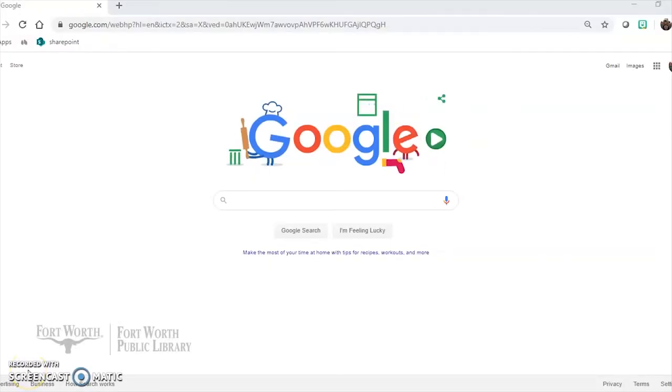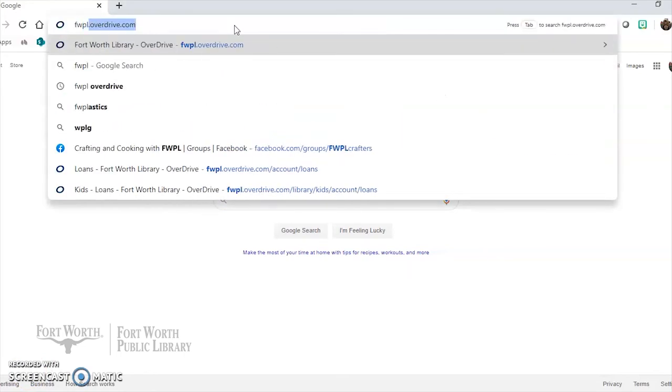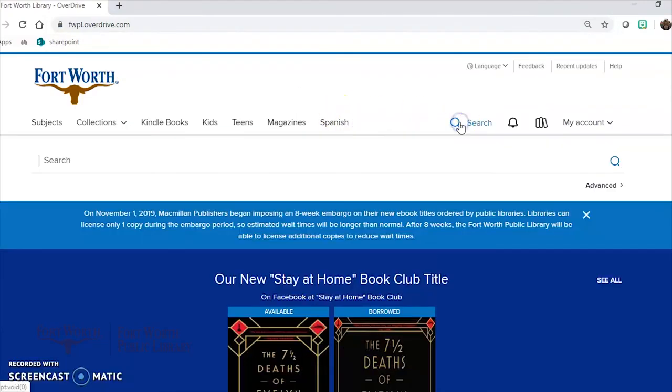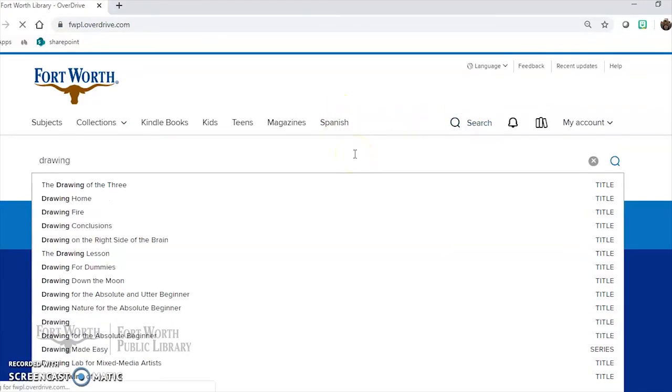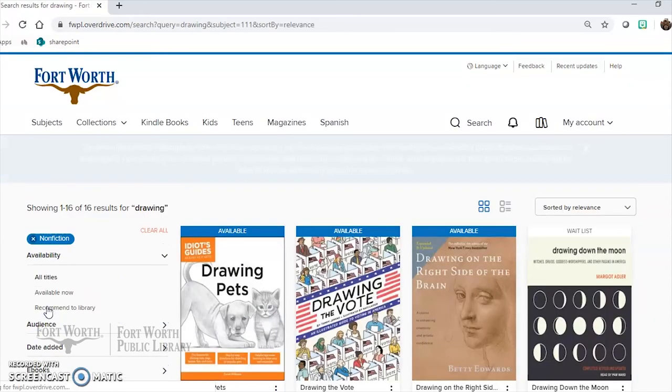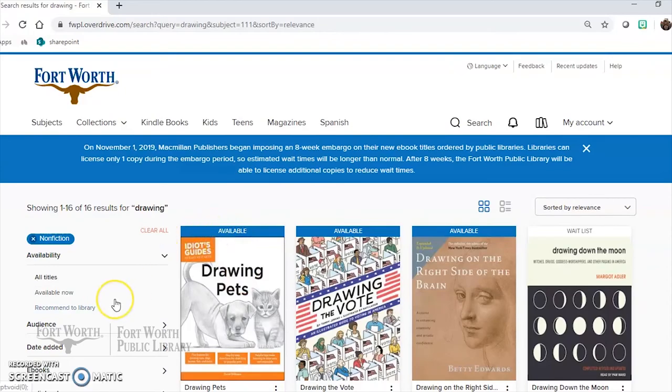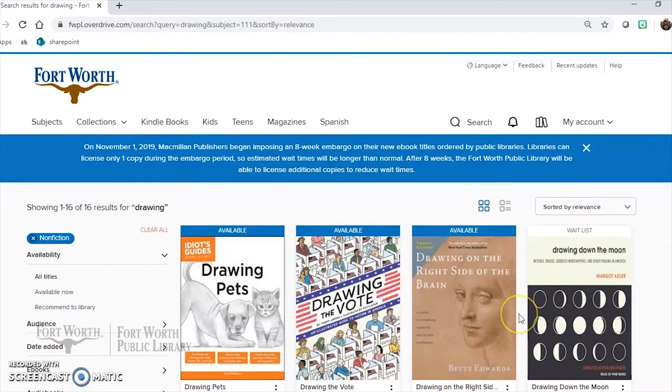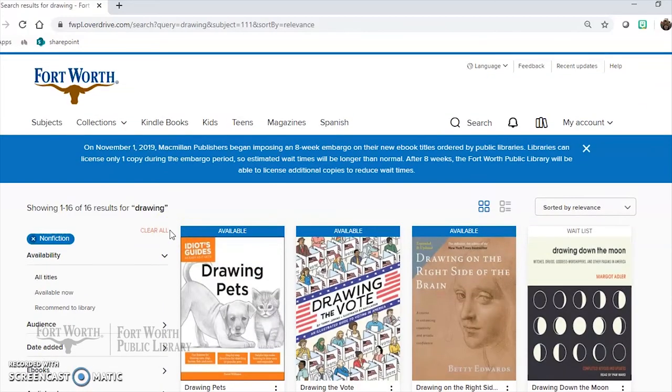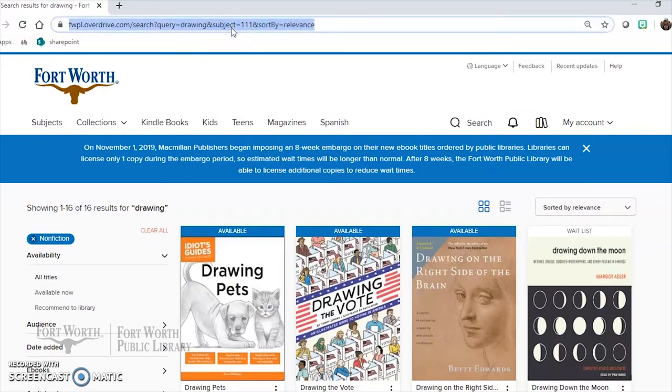I hope that you feel your creative juices flowing. If you need some resources head on over to the Fort Worth Public Library Overdrive website. We can search for drawing right here and narrow the search by going to nonfiction. And as you can see we have plenty of drawing books that are available for checkout right now. You can check it out digitally from the comfort of your own home.